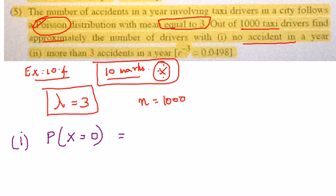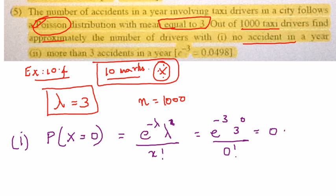So when there is no accident in a year, I am going to substitute in my Poisson distribution formula, probability distribution formula for Poisson, x is equal to 0. And I know my lambda is equal to 3. Since 3 power 0 and 0 factorial is 1, this is straight away going to be e power minus 3, which is specified as 0.0498.